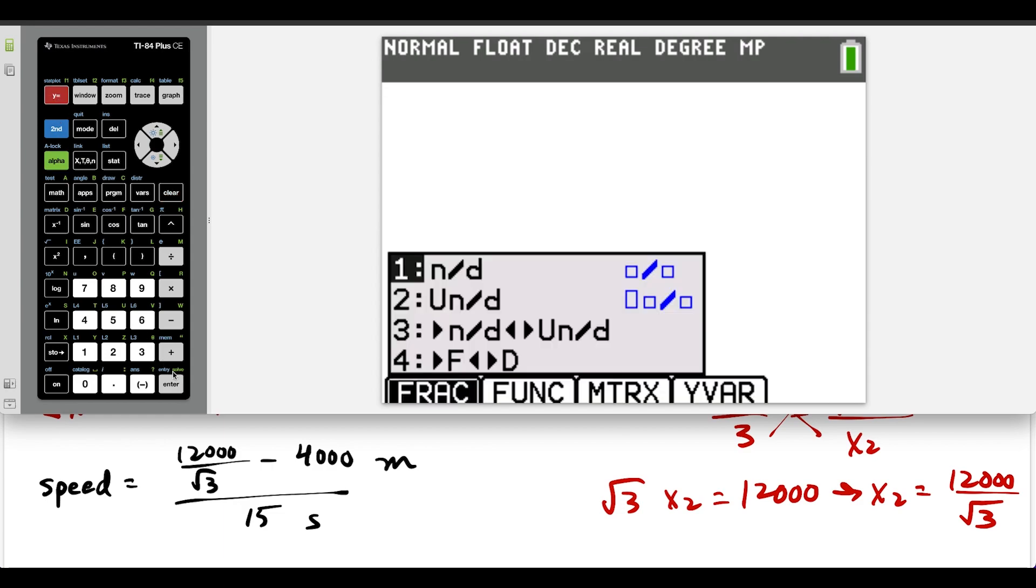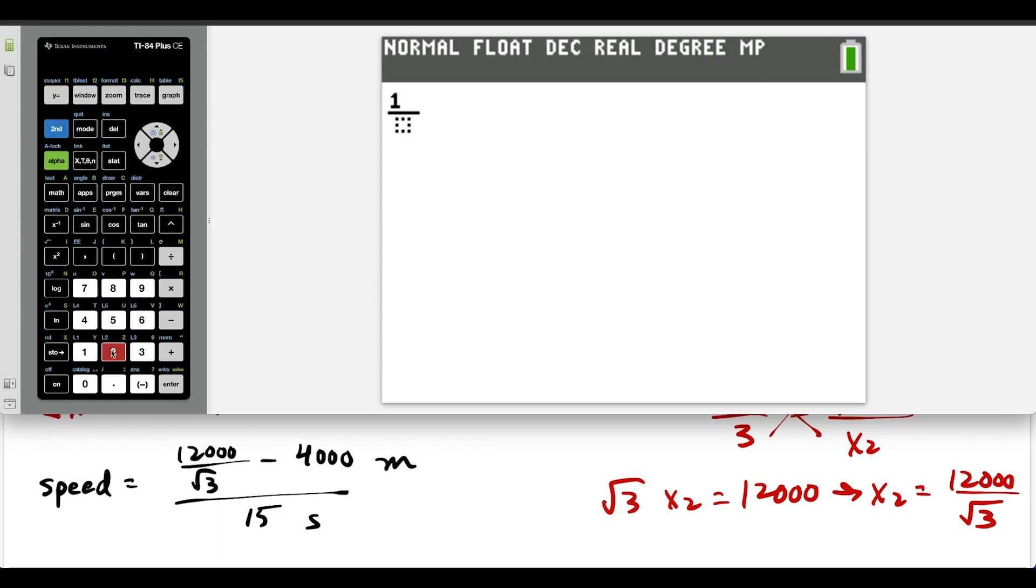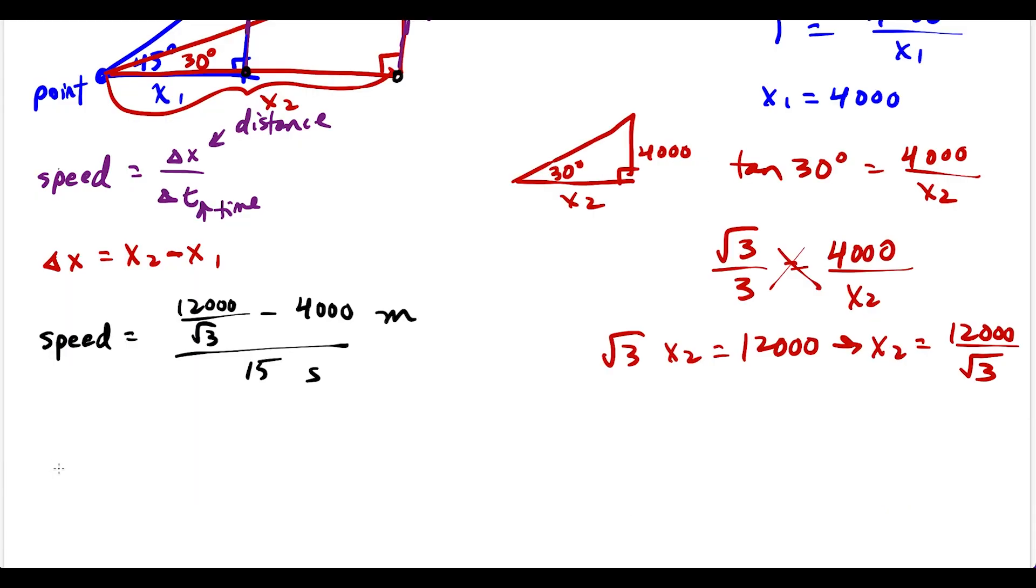So I'm going to press alpha y equals enter to pull up a blank fraction and we're going to have 12,000 divided by square root 3. And now we're subtracting 4,000 and then dividing this difference by 15. And we'll round to the nearest thousandth place. So we have 195.214. So let's simplify here. We have the speed of the plane is equal to 195.214 meters per second.